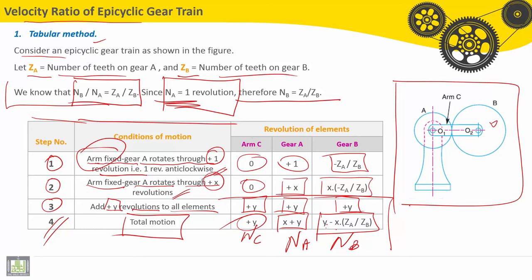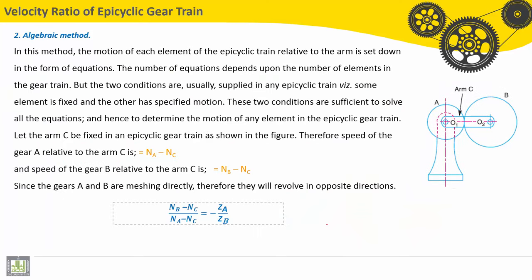So this method is very direct and very simple. Let's move now to the algebraic method. In this method, the motion of each element of the epicyclic train relative to the arm is set down in the form of equations. The number of equations depends upon the number of elements in the gear train.